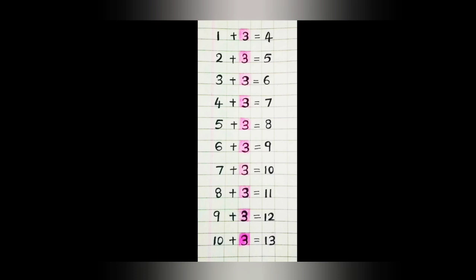Step three — you can say with me. One plus three is four. Two plus three is five. Three plus three is six. Four plus three is seven. Five plus three is eight. Six plus three is nine. Seven plus three is ten. Eight plus three is eleven. Nine plus three is twelve. Ten plus three is thirteen. Once again: one plus three is four. Two plus three is five. Three plus three is six. Four plus three is seven. Five plus three is eight. Six plus three is nine. Seven plus three is ten. Eight plus three is eleven. Nine plus three is twelve. Ten plus three is thirteen.